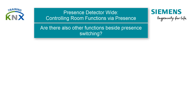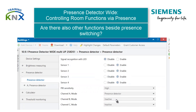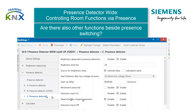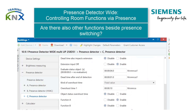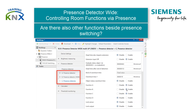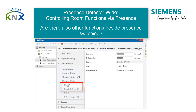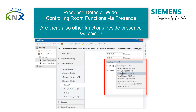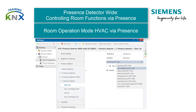Can functions other than switching be controlled via Presence as well? With the Siemens Presence Detectors, it is basically possible to control a whole series of parallel running controls without the use of additional components, such as scene controllers — because there are up to three function blocks that can be controlled simultaneously by the Presence Sensors, and because there are two output functions or objects within each of these function blocks. For all output objects' data point types, from 1-bit switching to 16-bit floating point as well as scene functions are available.